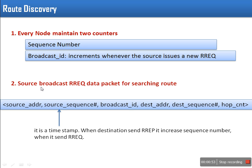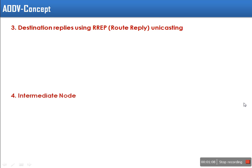A source will broadcast route request packets. These are the attributes of a route request packet: source address, source sequence number, broadcast ID, destination address, destination sequence number, and hop count.